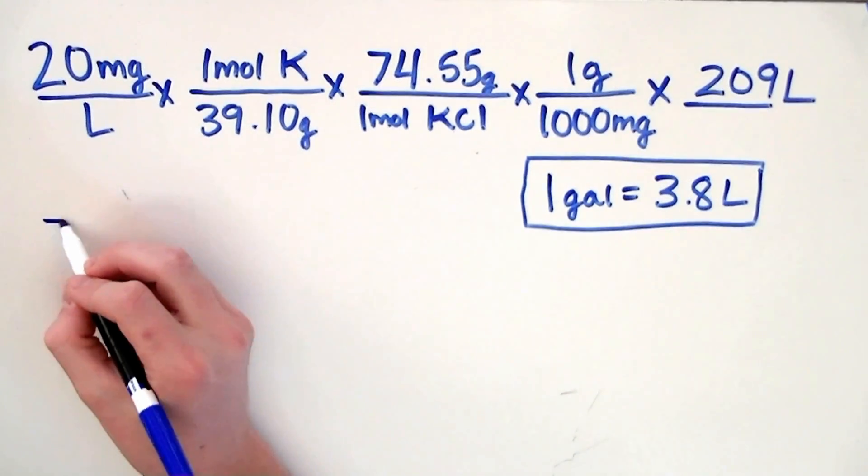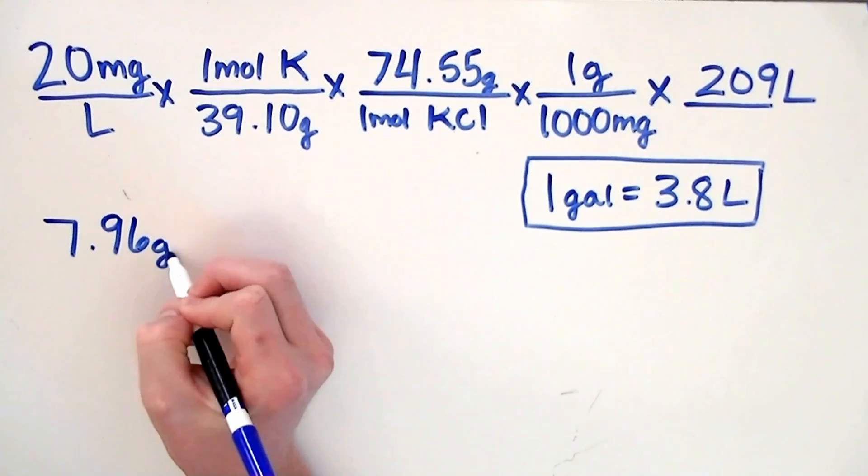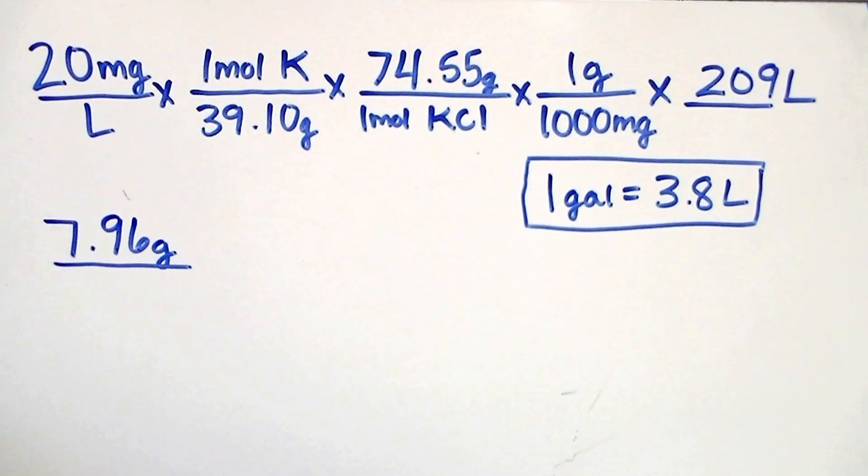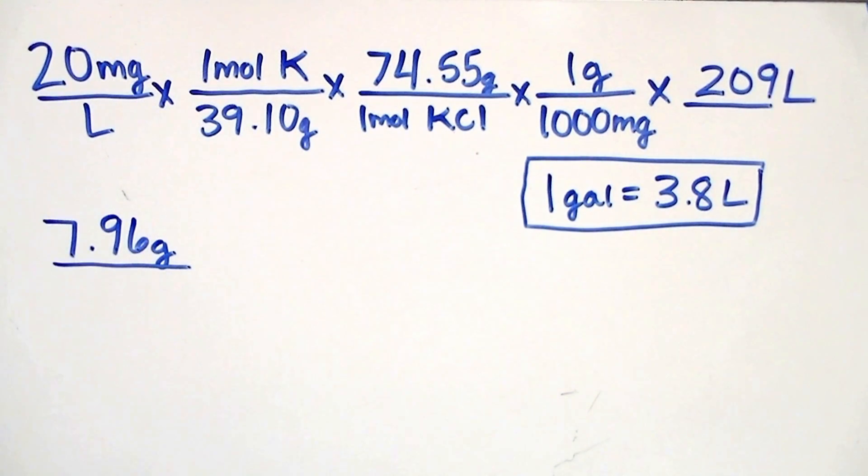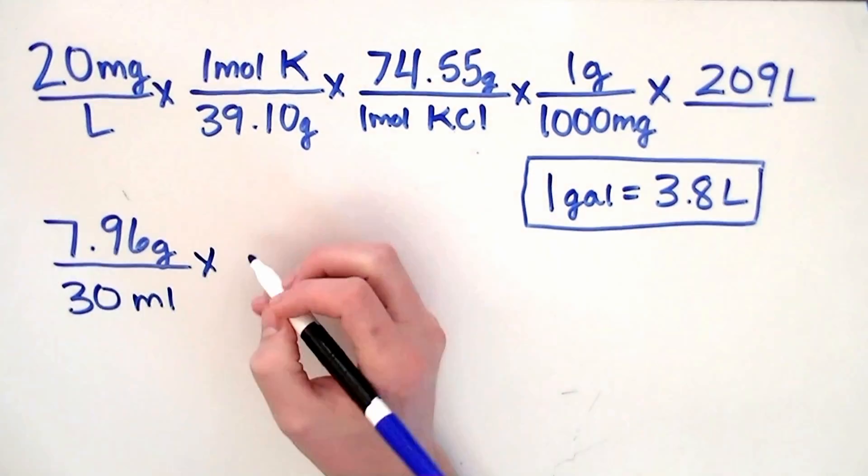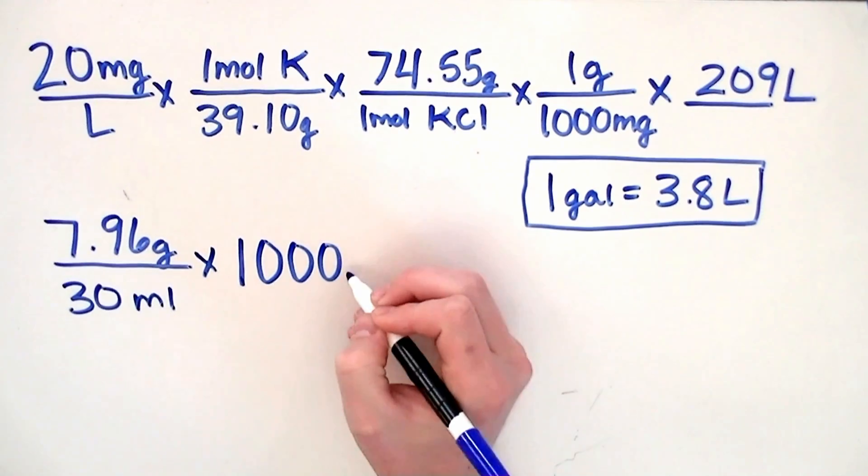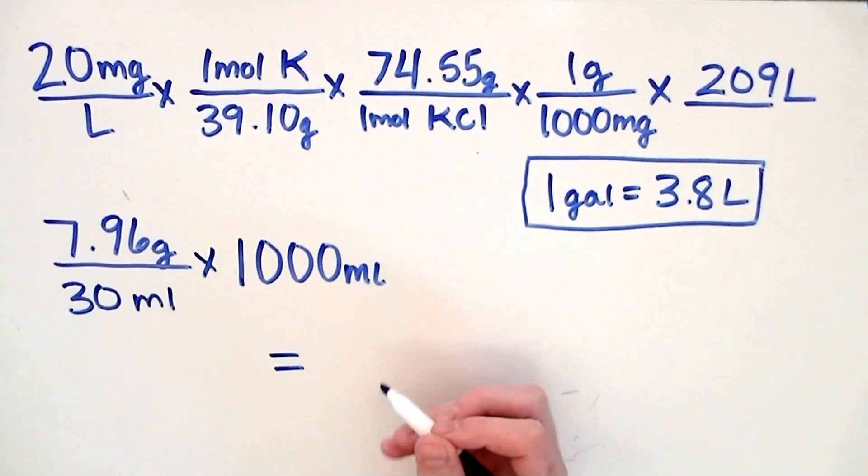When we do the math above we end up getting 7.96 grams which is the amount of KCL you would add to your aquarium if you were dry dosing. Since we're making a solution we get to decide the volume of each dose. We're going to choose 30 mils. Last we multiply by 1,000 mils which is the volume of our fertilizer container.